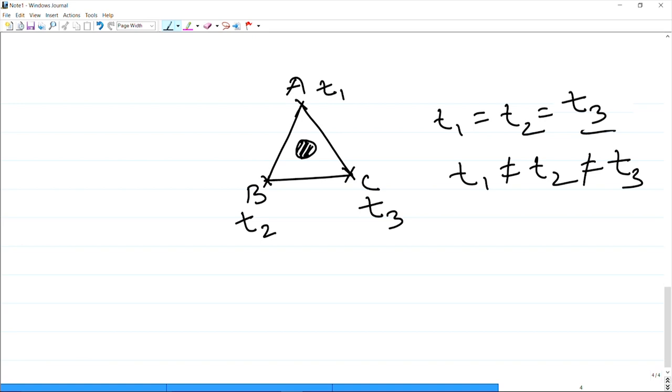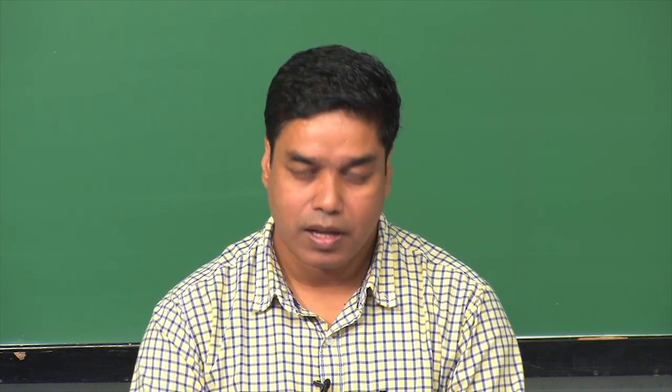When you place a number of sensors around particular locations, the different arrival times at each sensor give you an idea of the zone or location from where the acoustic emission signals are coming out. This is how the zonal location technique indicates the zone of emission. Accordingly, you should target those areas while inspecting and taking corrective measures.